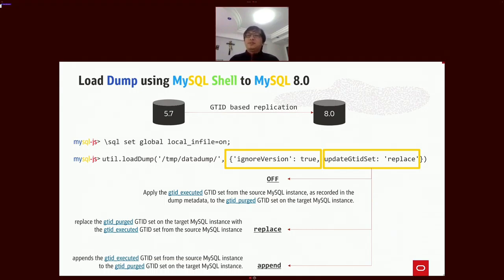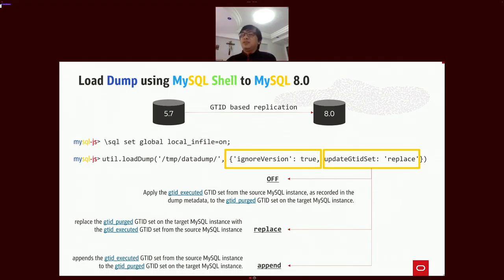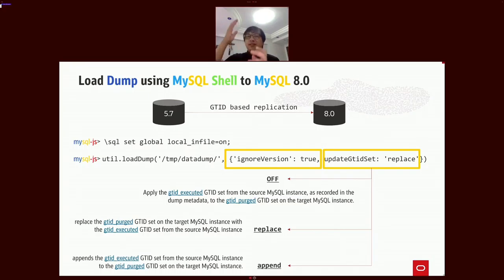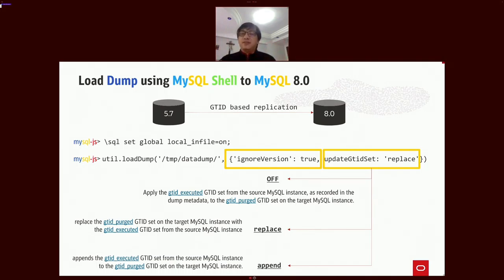When loading as part of an upgrade to MySQL 8.0, use ignore_version and update_gtid_set so that the GTID executed on the lower version is applied to the GTID-purged set of MySQL 8.0, enabling GTID-based replication setup. For data migration, you can create a baseline migration using MySQL Shell dump and load to MySQL 8.0, then use GTID-based replication to synchronize transactions that occurred on the source during the load, and wait for cutover.